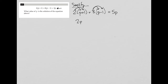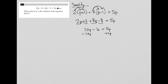So I have 2p + 2 + 8p - 8 = 5p. 2p plus 8p is 10p. Positive 2 minus 8 is negative 6, so we have 10p - 6 = 5p. Then I'm going to subtract 10p from both sides, leaving me with negative 6 equals negative 5p.